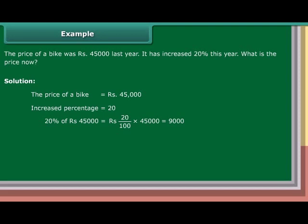20 upon 100 into Rs. 45,000 is equal to Rs. 9,000. New price is equal to Rs. 45,000 plus Rs. 9,000, which is equal to Rs. 54,000.